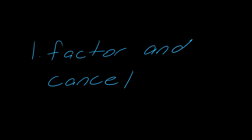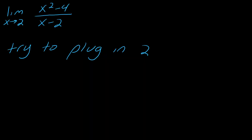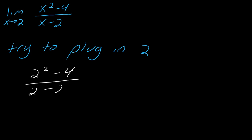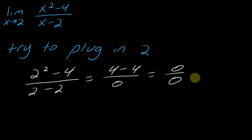The first trick is to factor and cancel. This is an example I've talked about in another limits video. How do you know you'd have to use this trick? Just try plugging in — so when you plug in 2, you get 4 minus 4 over 0, so you get 0 over 0. When you get 0 over 0, take your time to interpret what this means. Don't be quick to say it doesn't exist — it's usually pretty rare that a limit will not exist, and it's actually a lot of work to prove something does not exist.